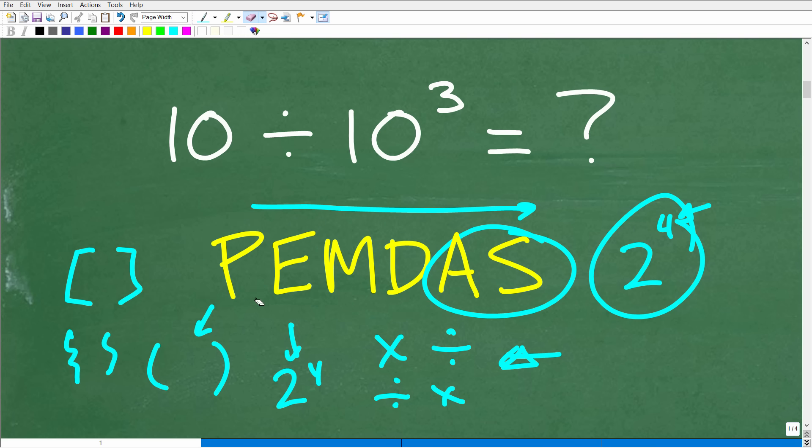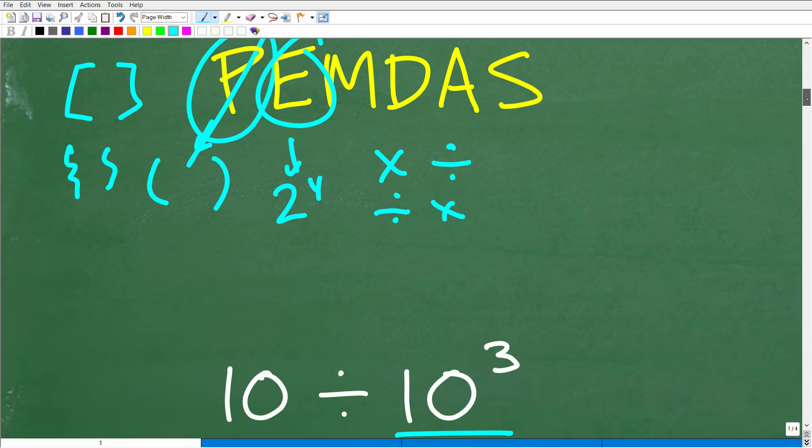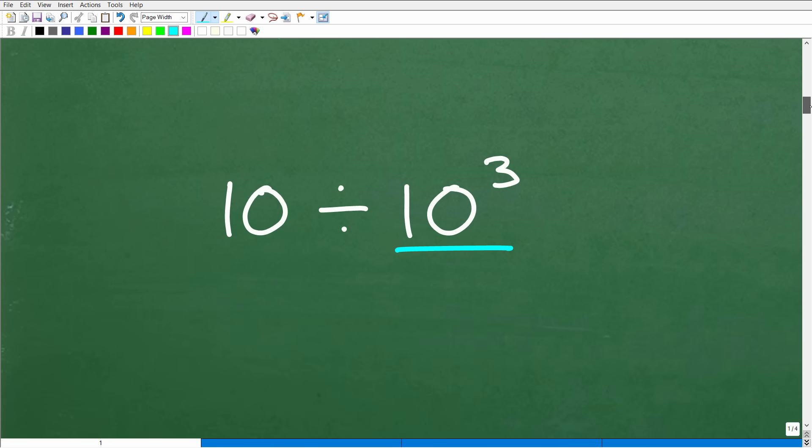Let's go ahead and think about PEMDAS as we go through this problem. The first thing is, do we have any parentheses? No. Do we have any powers? Yes. So that's what we're going to be doing. We have to figure out what 10 cubed is equal to. That is the first step.